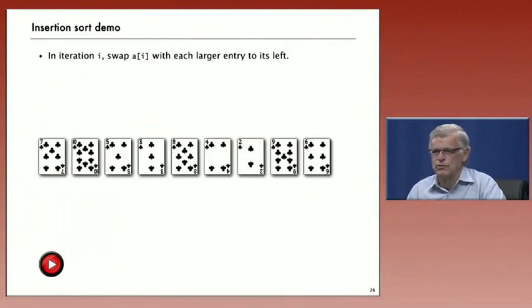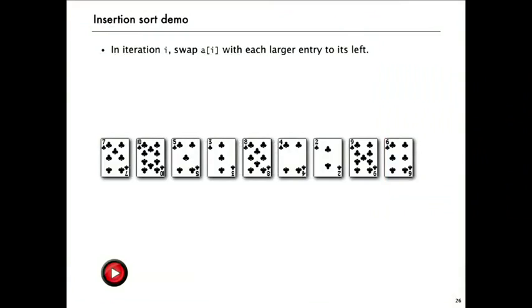Let's look at a demo of insertion sort. For insertion sort, what we're going to do is move an index i from left to right as before, but now in the i-th iteration, we're going to move a[i] into position among the elements to its left. Let's look at how that works on our example with cards.